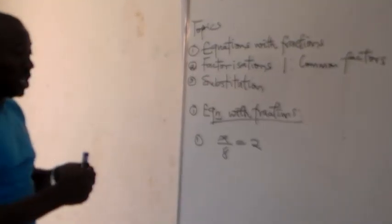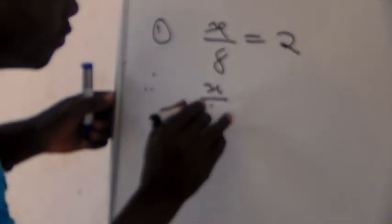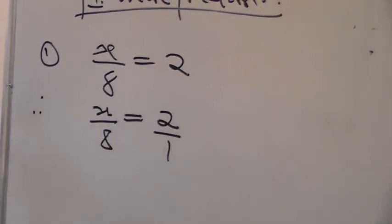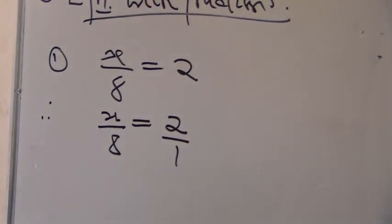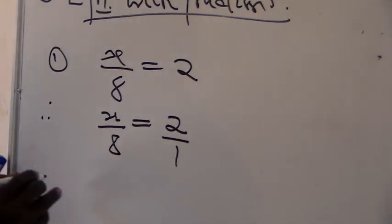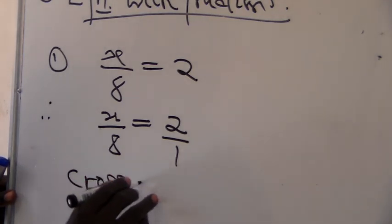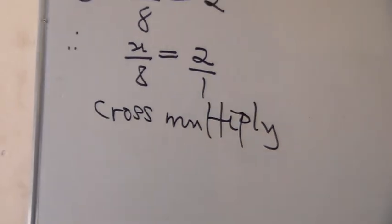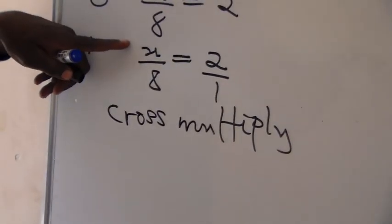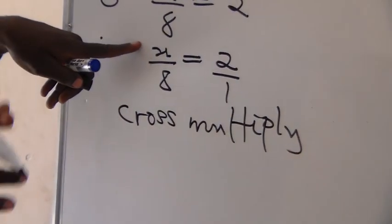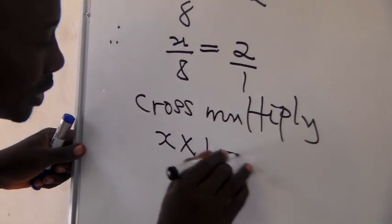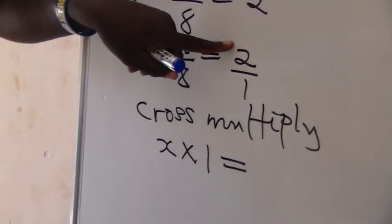We force balance both sides so that we now have x over 8 equal to 2 over 1. Now it is balanced. There are two ways to solve for the value of x. The first method is we can cross multiply. When we cross multiply, the denominator on the left-hand side multiplies the numerator on the right-hand side, so that we have x multiplied by 1.